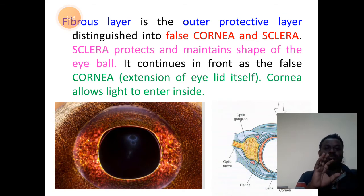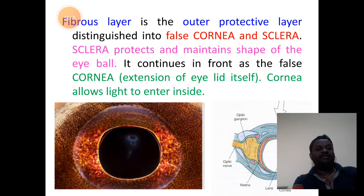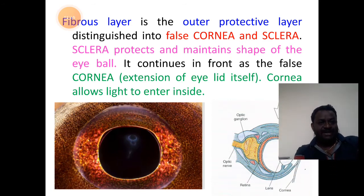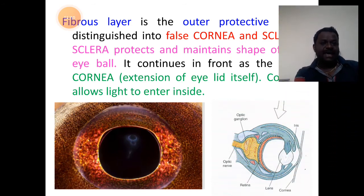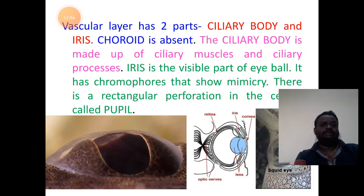The cornea is a place that allows light to penetrate in — allows light to pass through. That is the importance of the first layer called the fibrous layer.